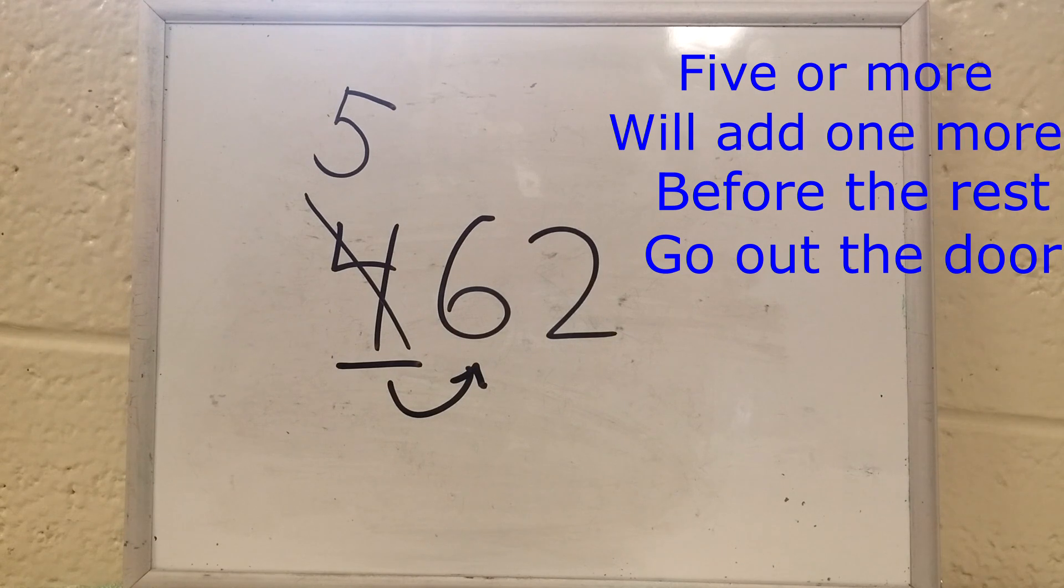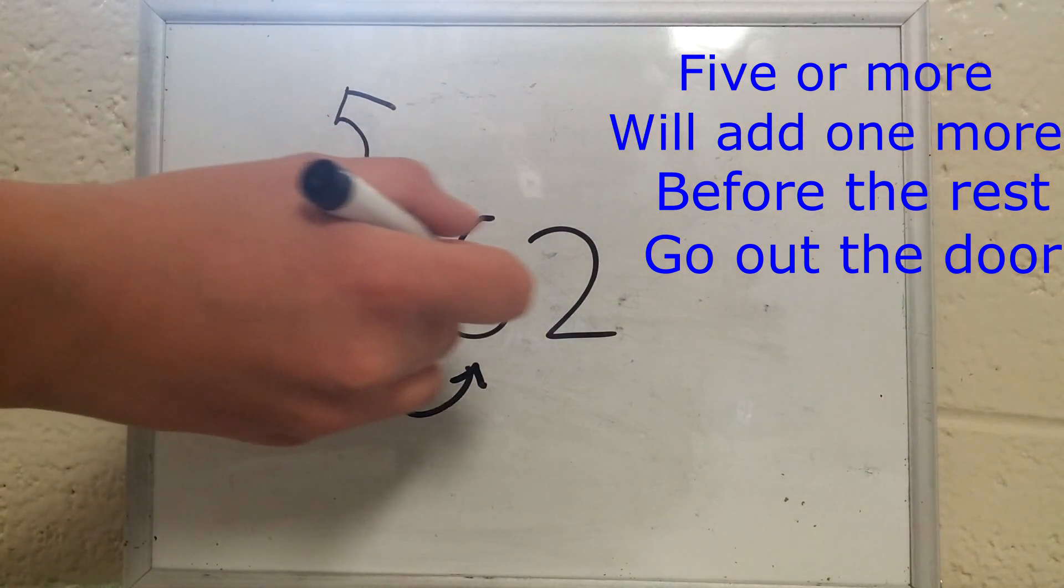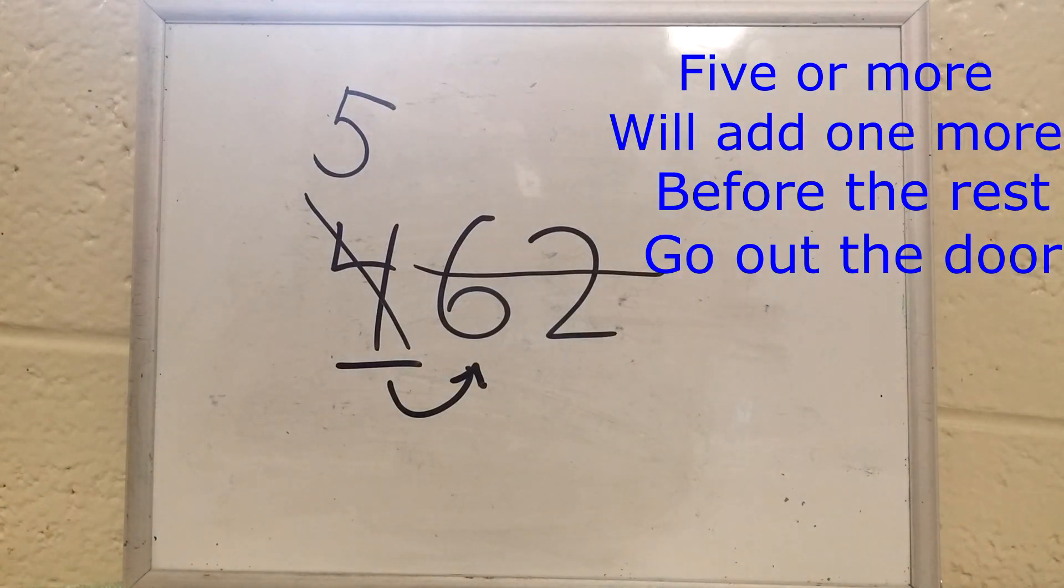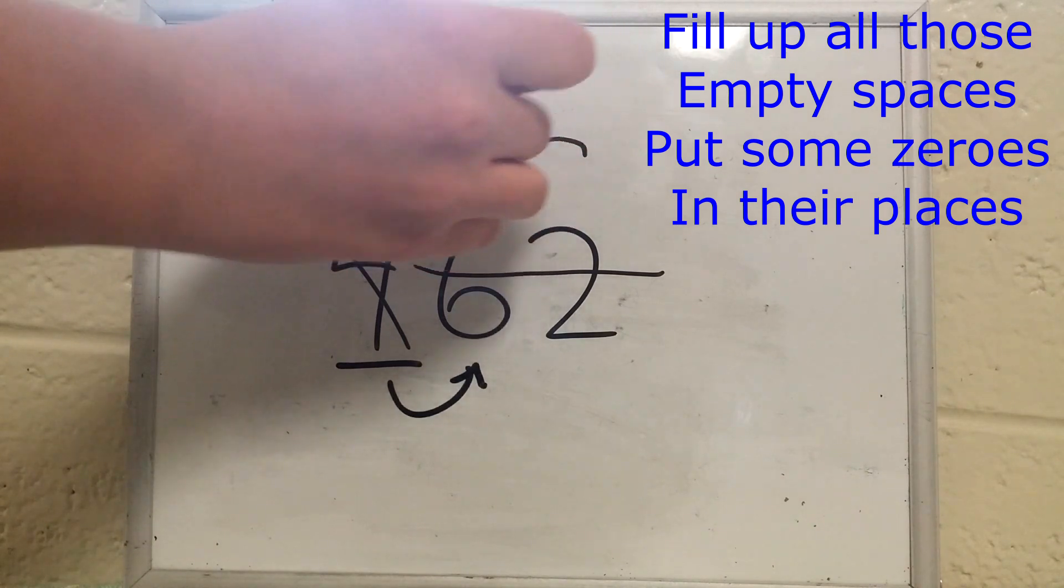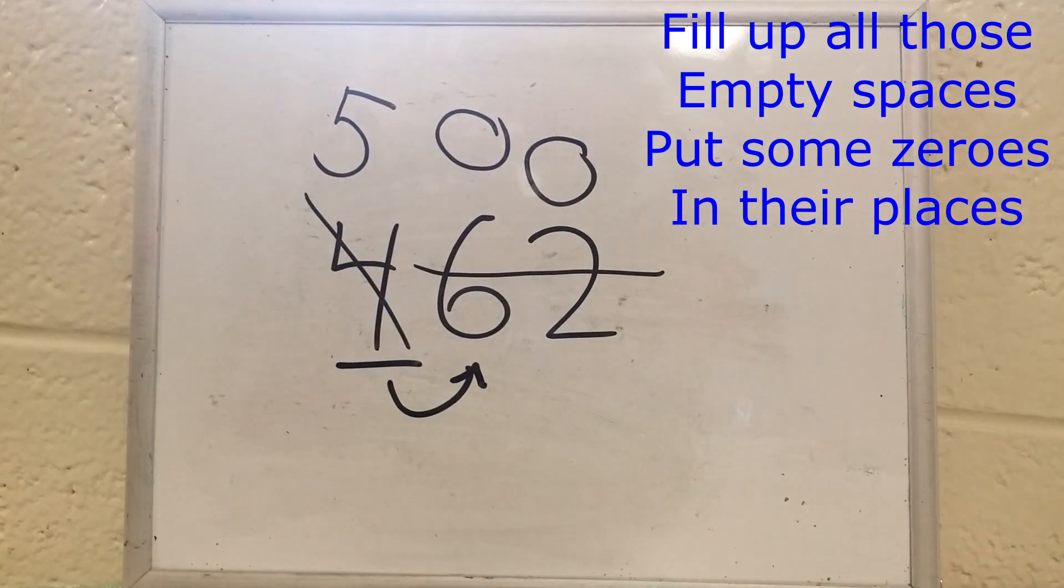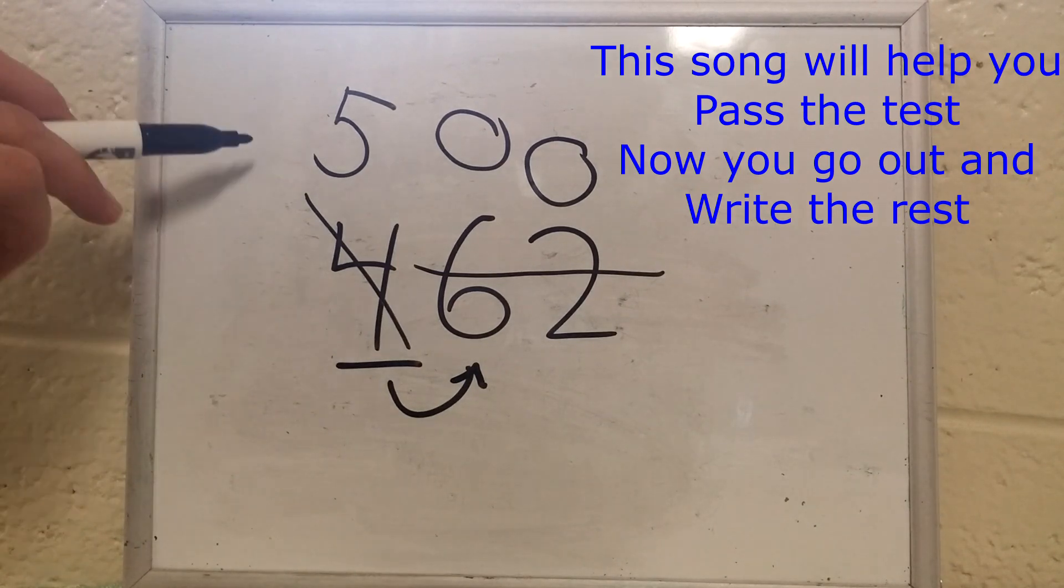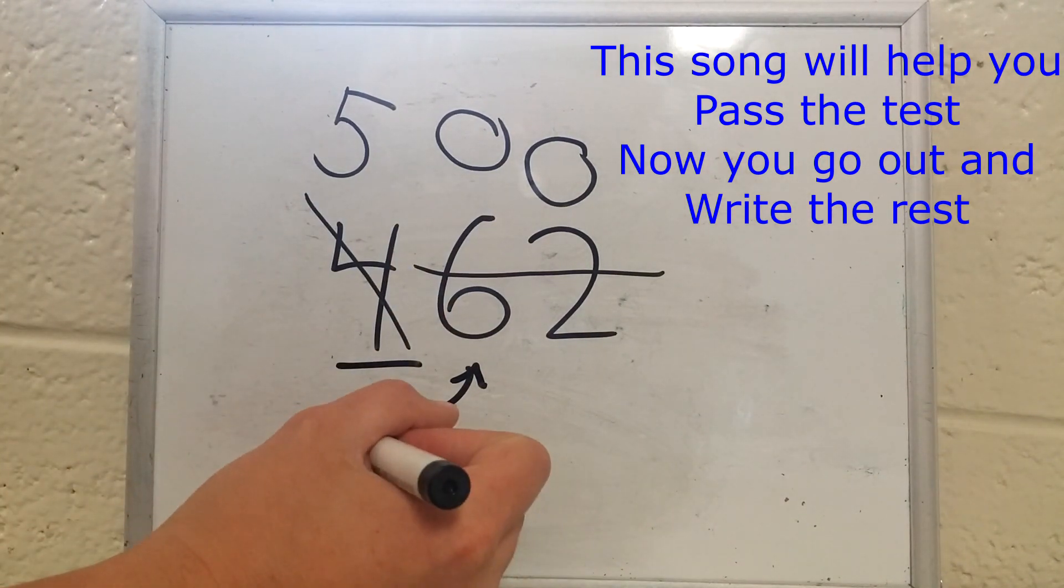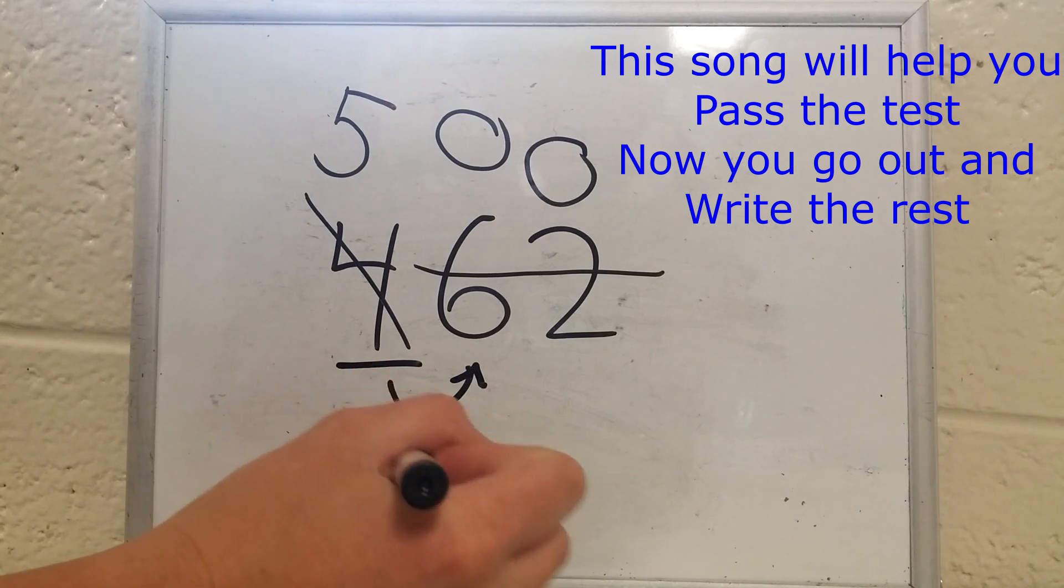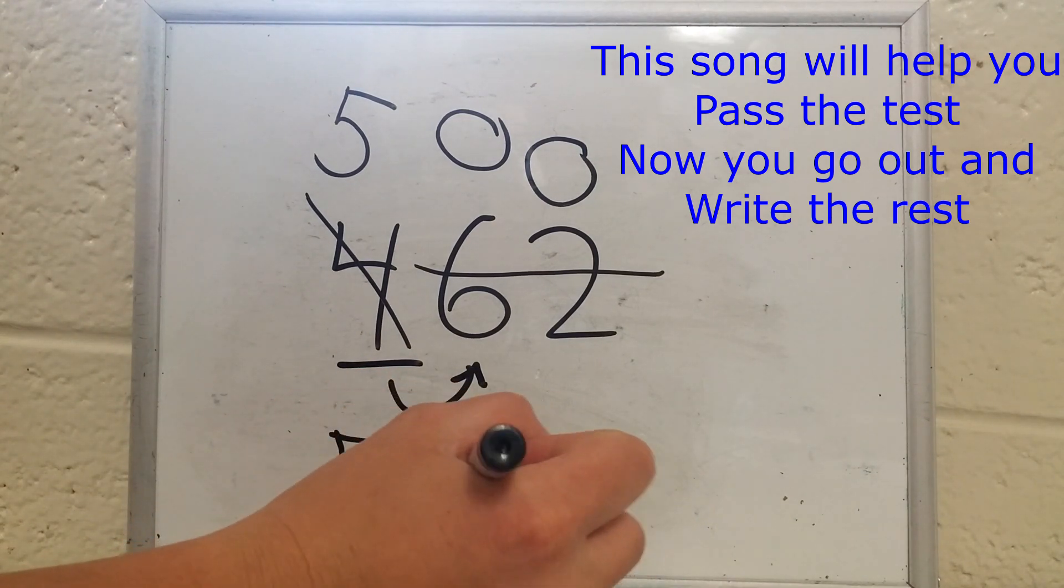Five or more, we'll add one more. Before the rest go out the door. Those ones are sent out the door. Fill up all those empty spaces, put some zeros in their places. There's the zeros. This song will help you pass the test. Now you go out and write the rest. Now we write our final answer, 500.